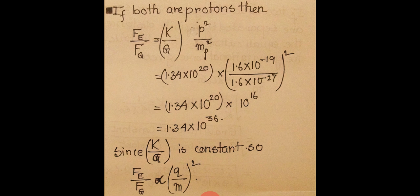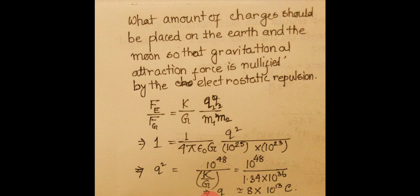K/G is a constant in free space or any medium. Therefore, the ratio of electric force to gravitational force is proportional to the square of the charge-to-mass ratio. This is a very useful implication: if you know the charge-to-mass ratio, you can quickly find Fe/Fg without lengthy calculations, saving significant time in competitive exam problems.